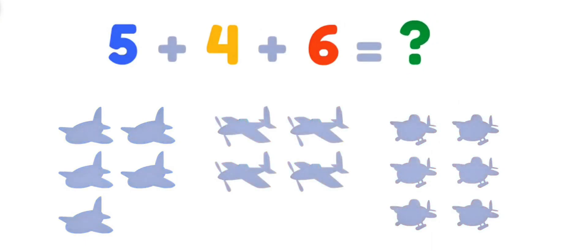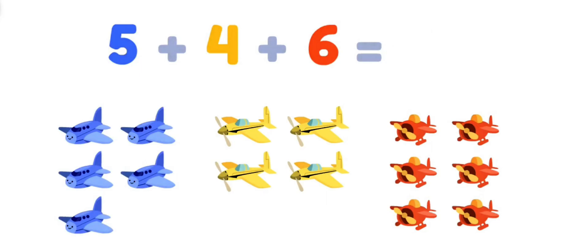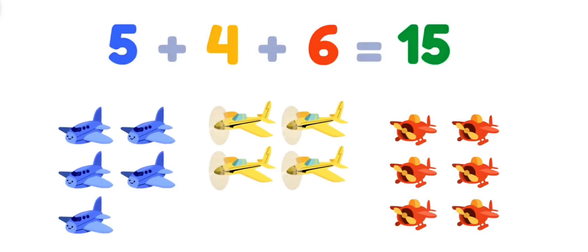Let's count my plane collection! There are five blue planes, four yellow planes, and six red planes! How many are there together? Five plus four plus six equals fifteen planes total! My collection rules!